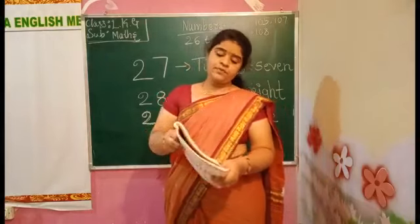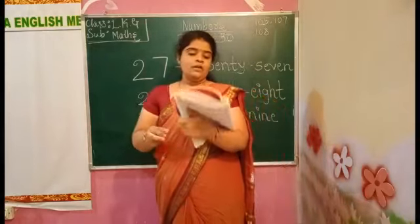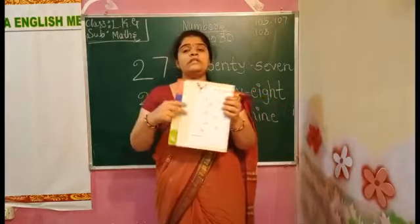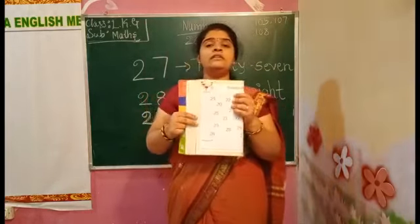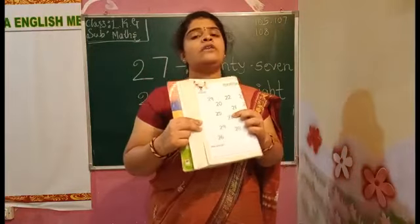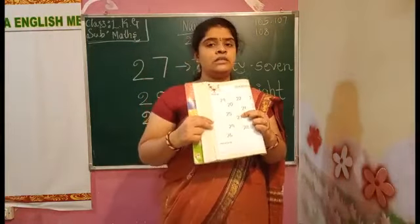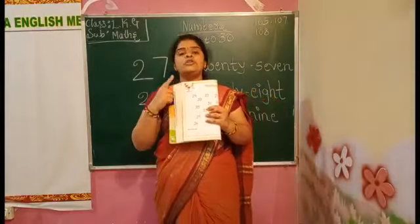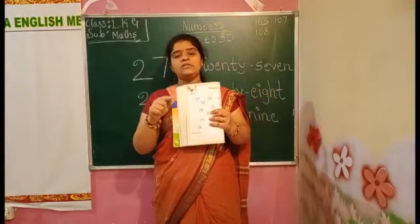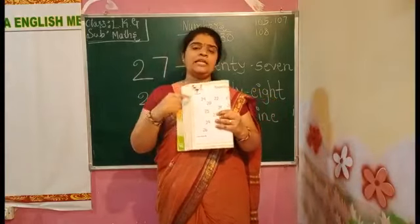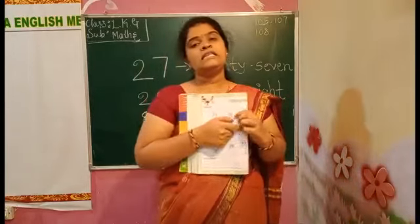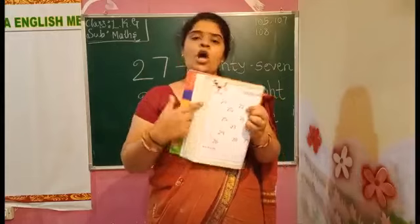Turn the page. Once again, you have to circle the number. The number 29 — 2, 9, 29 — you have to circle that number in the given boxes.